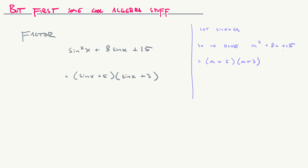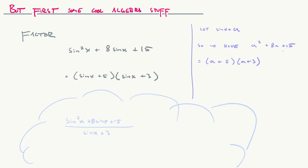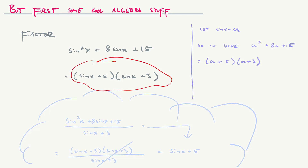You might wonder where this is useful. Think about if you had an expression like (sin²x + 8 sin x + 15) over (sin x + 3). This can be simplified — the numerator factors into those two factors, and there's a common factor in the numerator and denominator, so this expression actually just simplifies to sin x + 5.